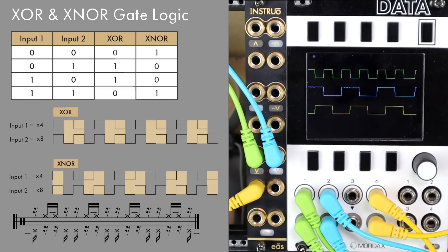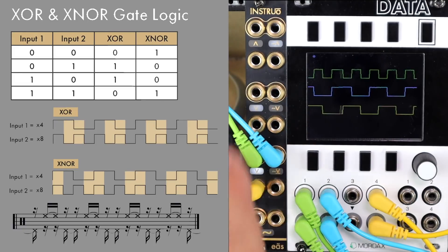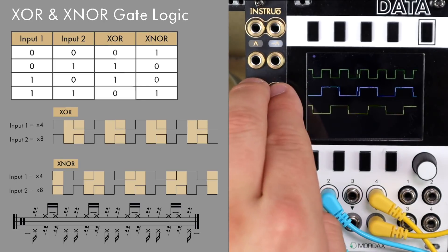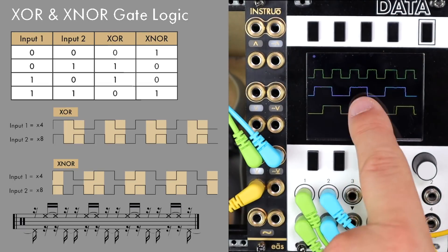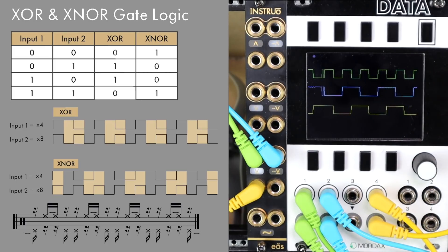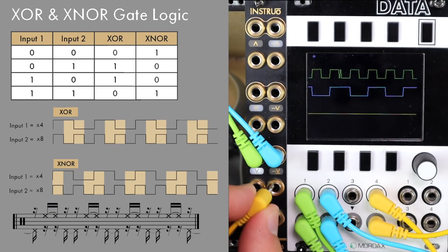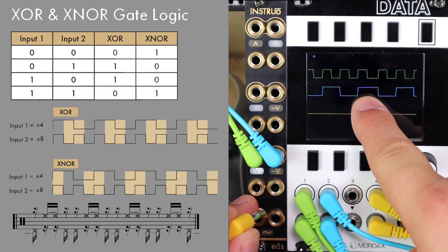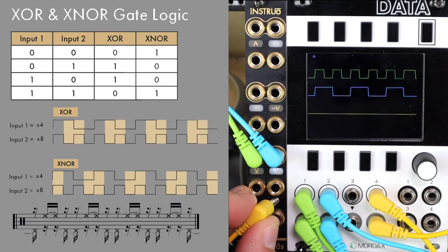XOR logic is exclusive logic, and that's different to normal OR logic in that it's exclusively one input or the other. Unlike OR logic where any input will be high, this isn't actually active where both inputs are together — only when one of them is. And XNOR is the opposite: active when both of them line up together, which wouldn't happen on the XOR, and also when none of them are active.